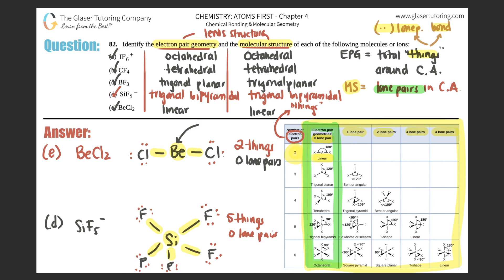In every case here, the electron pair geometry equals the molecular structure. Hopefully in the next questions you'll get examples where they differ — they have to give you those. Thank you for tuning in, click subscribe if you like it, and I'll see you in the next question.